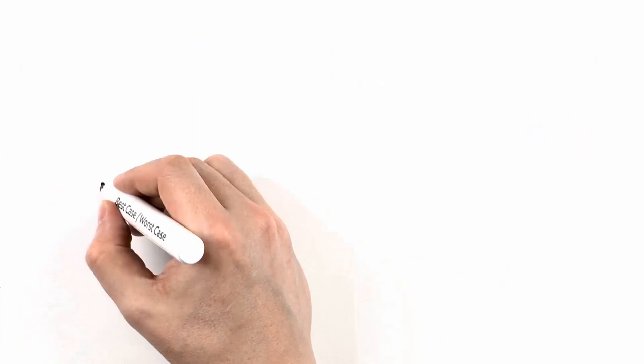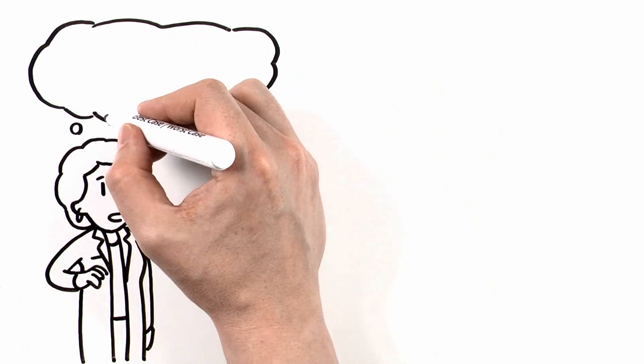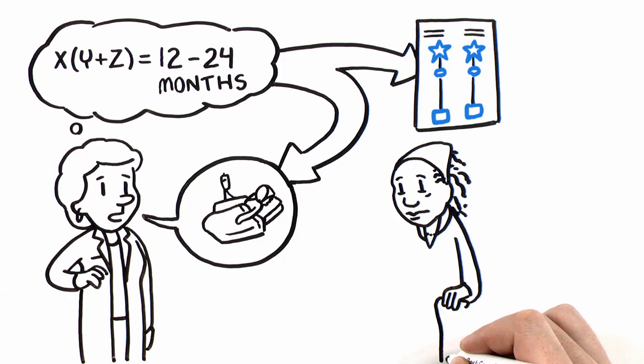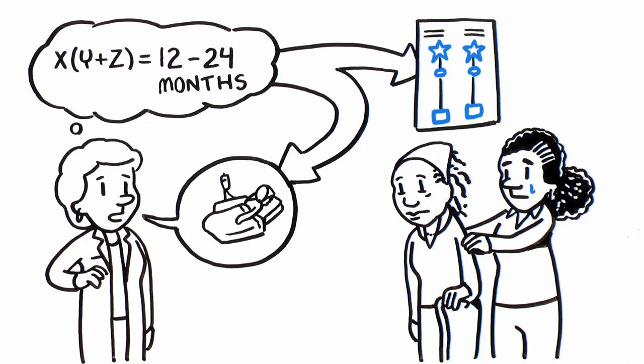As nephrologists, we know Gladys' age and comorbidities predict a median survival of 12 to 24 months with dialysis. Best case, worst case helps you translate your knowledge of this important statistic. Telling stories about the range of possible outcomes allows patients and families to visualize what might happen in a way that numbers alone cannot.